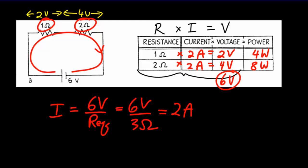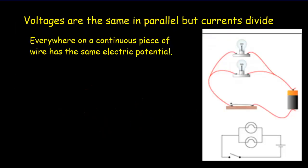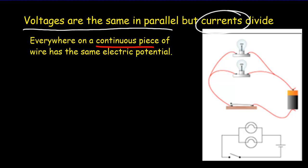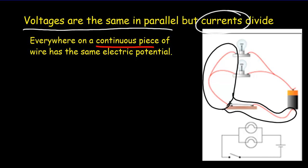Another thing to keep in mind - something very simple but very critical: voltages are always the same in parallel, and now it's the currents that divide. Here we've got two bulbs in parallel. Anywhere on a continuous piece of wire the voltage has to be the same. Say this is a 3 volt battery - all of this continuous wire would be at 3 volts, the negative side would all be at 0 volts, so both lamps in parallel get the same voltage across them: 3 volts.